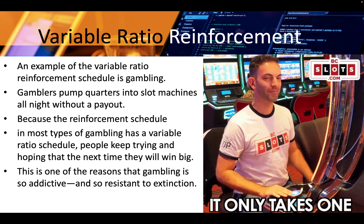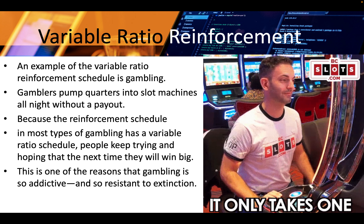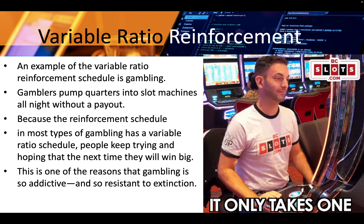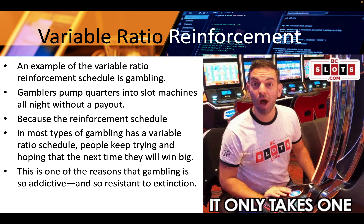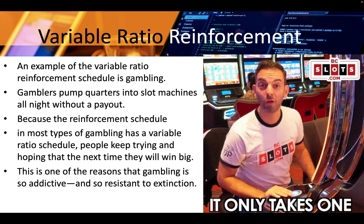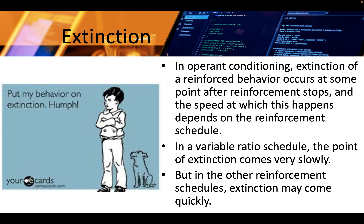Because sometimes you actually win — it only takes one. That's what makes people buy lottery tickets when there's a billion dollars involved. It's a one-in-a-billion shot, but you could be that one-in-a-billion. In operant conditioning, extinction of a reinforced behavior occurs at some point after reinforcement stops, and the speed at which this happens depends on the reinforcement schedule. In a variable ratio schedule, the point of extinction comes very slowly, but in other reinforcement schedules extinction may come very quickly.